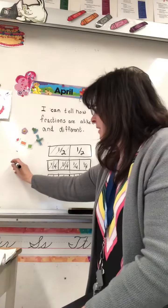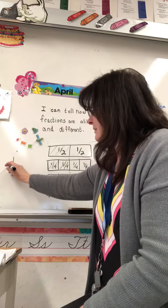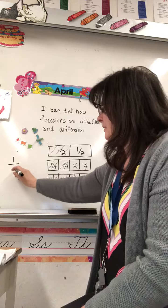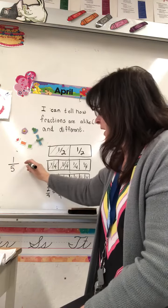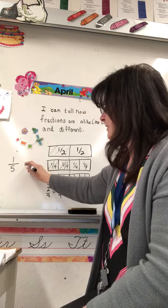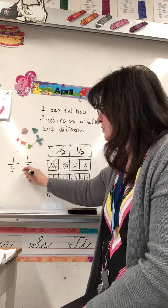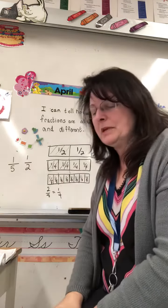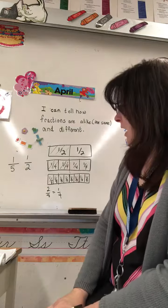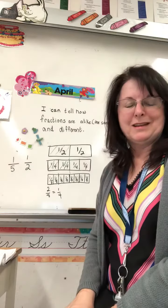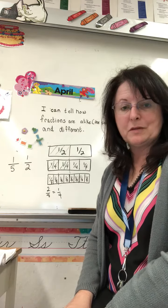If we are going to have a number like this, one is our numerator out of five, and if we are going to have a fraction like this, one out of two, two being our denominator, how are we going to know which one is smaller and which one is larger?